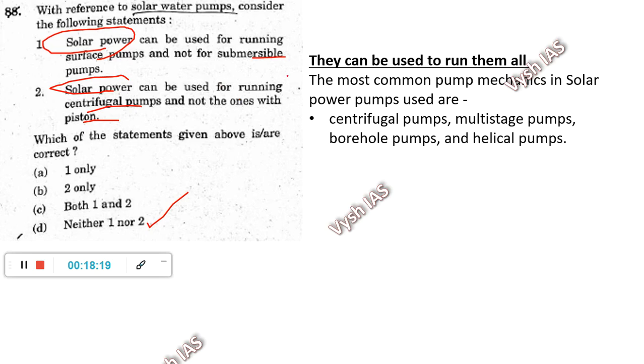Question 88 on solar water pumps: statement 1 says solar pumps can be used for running surface pumps but not submersible pumps; statement 2 says solar pumps can run centrifugal pumps but not piston pumps. There is nothing like that — solar power can be used for whatever pump you want. Both statements are wrong because solar pumps are used to run all types: centrifugal, multistage, borehole, and helical pumps. With basic common sense, everybody should get two marks for this. Don't think it's a difficult topic — use common sense.